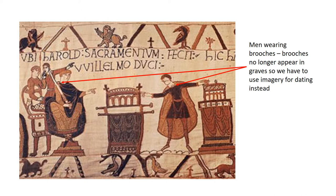Dating middle and later Anglo-Saxon brooches is much harder. We can't use grave goods because people are no longer buried in their clothes and jewellery — we have to use pictures instead. For example, William the Conqueror wearing a brooch at the shoulder and King Harold wearing a brooch at the neck. Incidentally, men don't wear brooches until the late Anglo-Saxon period.